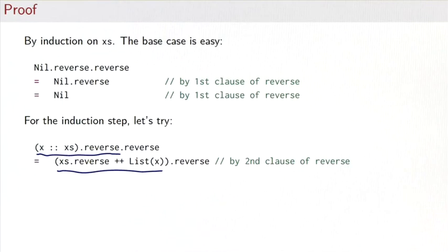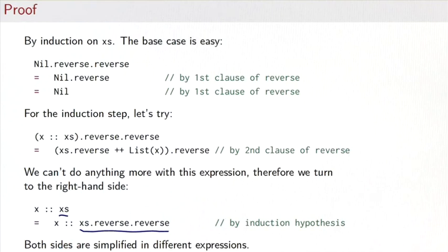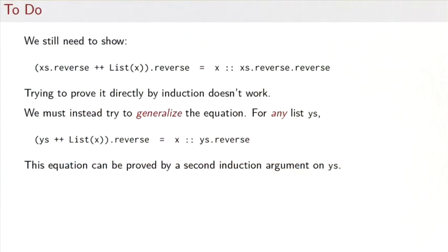The right-hand side reads simply x followed by xs. We can apply the induction hypothesis, which says xs is the same as xs.reverse.reverse, leaving us with x followed by xs.reverse.reverse. Unfortunately, both sides have simplified to different expressions, and proving it directly by induction doesn't work as we have seen.